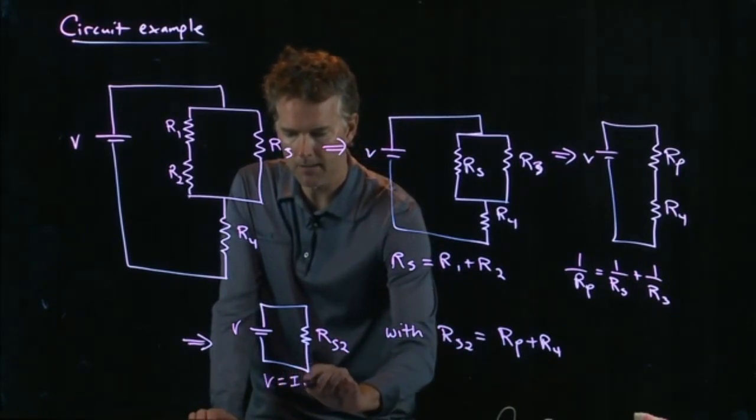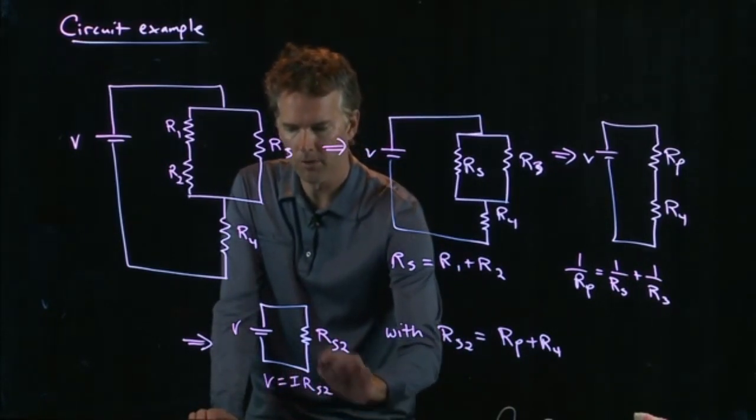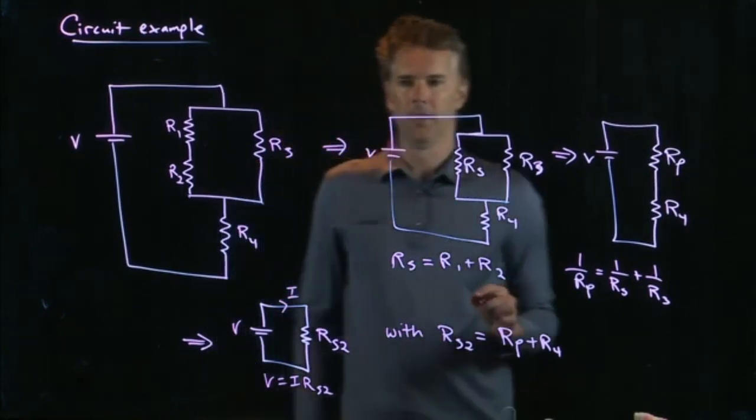V equals I times RS2. And so you can calculate the total current in that circuit.